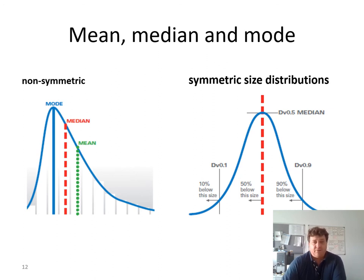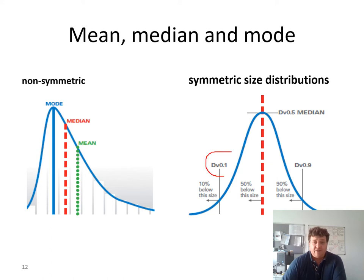Powders can have non-symmetric distributions. The distributions are Gaussian-shaped but can be non-symmetric or symmetric. Most distributions we deal with are pretty much symmetric. On a non-symmetric Gaussian distribution, the mode, median, and mean are distinct values. We will now learn what the quantities dv0.1, dv0.5, and dv0.9 mean.